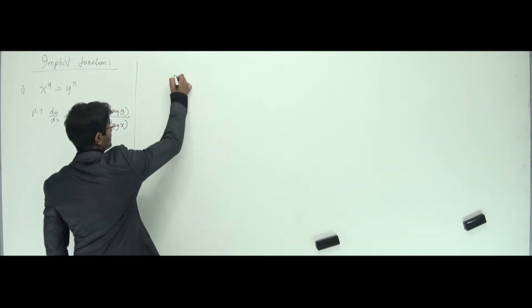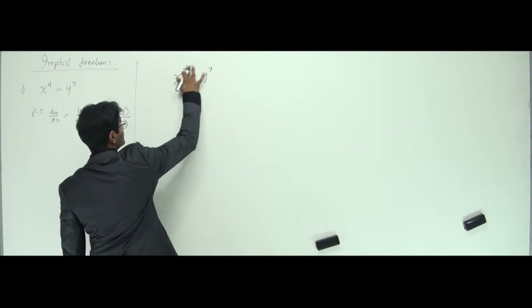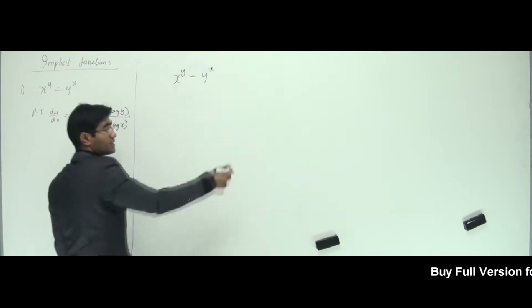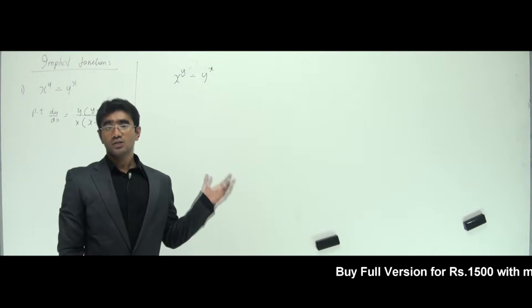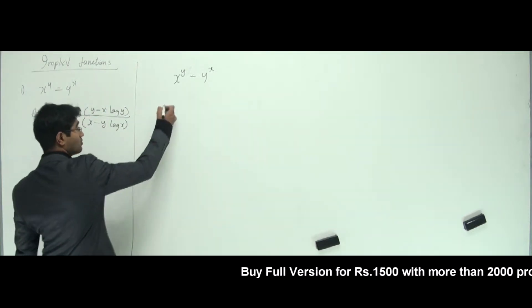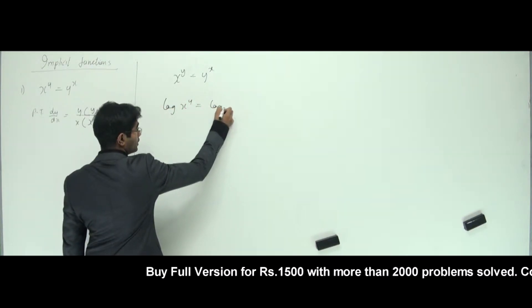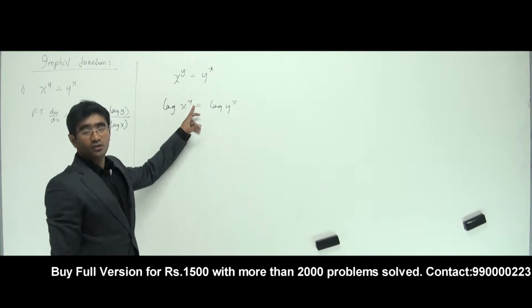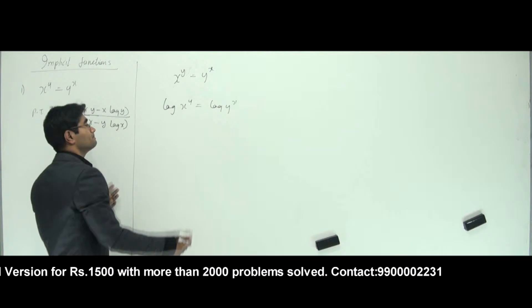Let me take the question x power y is equal to y power x. I know that if I have any function to the power of another function, I have to bring them down before I can start differentiating. This we learned in the previous type, that is the log type. So just take log on both sides and see what happens. Log of x power y is equal to log of y power x. Why am I supposed to do this? Because I have a function on the head of another function, on the exponent of another function.